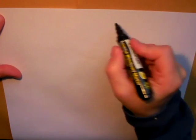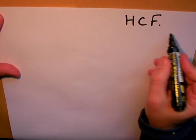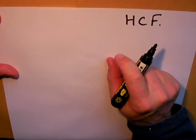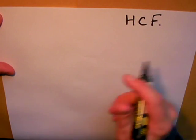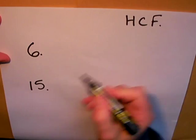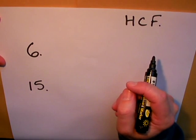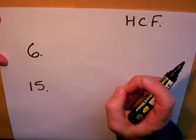What I'm going to do now is work out some factors, and I'm interested in the highest common factor of two numbers. The two numbers I'm going to start with are 6 and 15. I need to find out the factors of 6 and 15. Factors are numbers that divide exactly into a number.